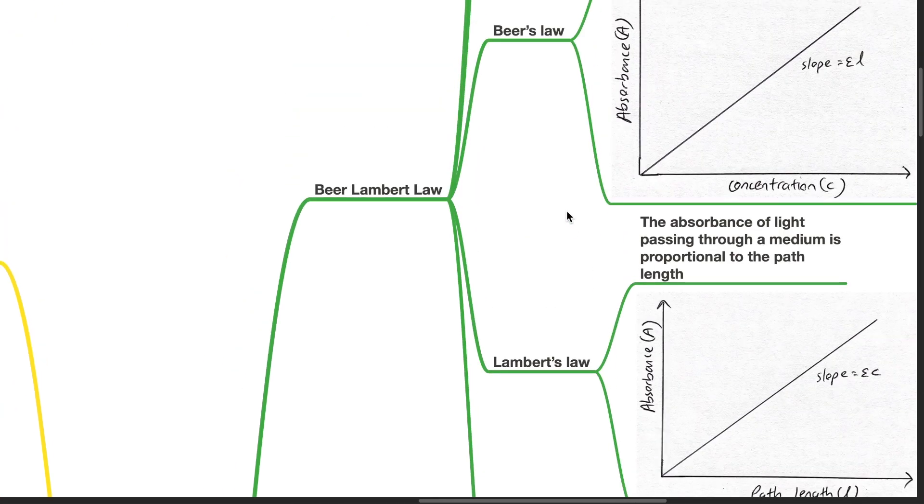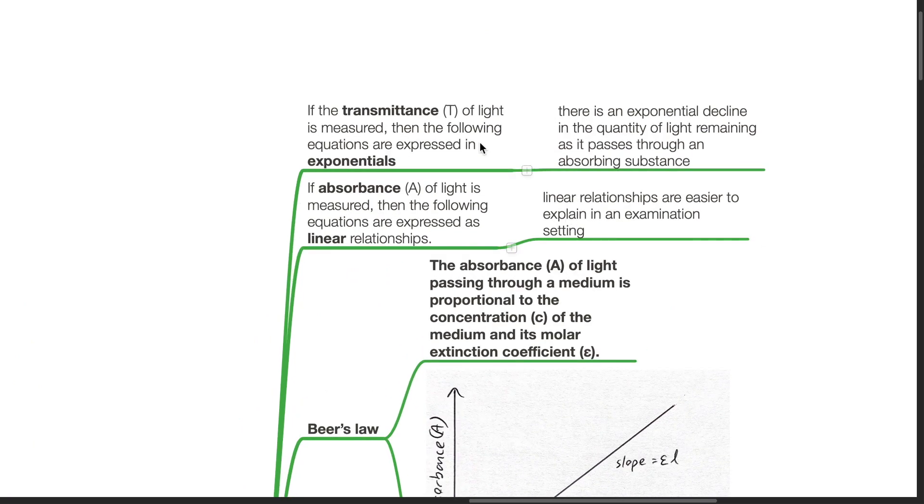Beer-Lambert Law. If the transmittance of light is measured, then the following equations are expressed in exponentials, as there is an exponential decline in the quantity of light remaining as it passes through an absorbing substance.